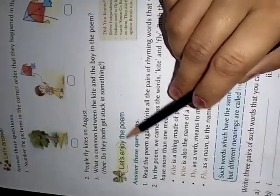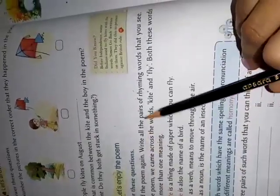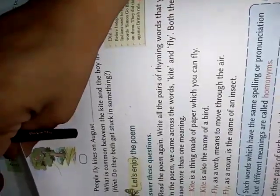Now, let's enjoy the poem. Answer these questions. Read the poem again. Write all the pairs of rhyming words that you see. Poem mein jitne bhi rhyming words mile te, you have to write it. Let's see how many rhyming words are there in the poem.